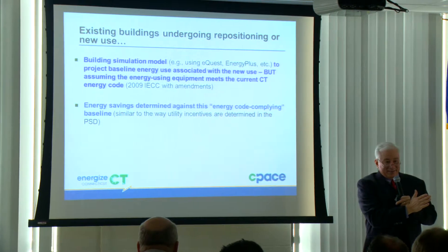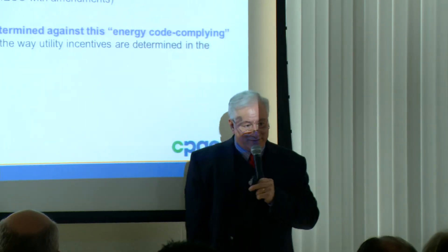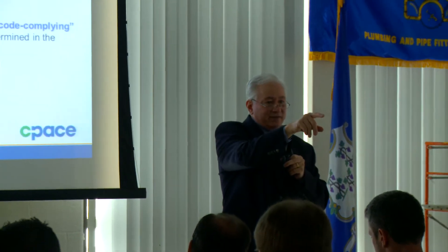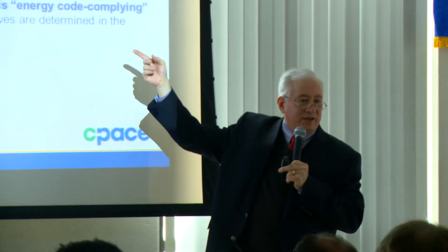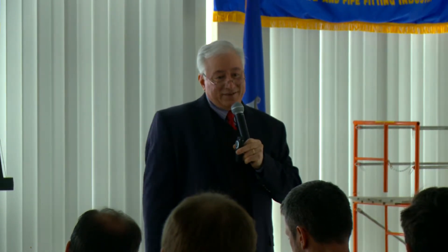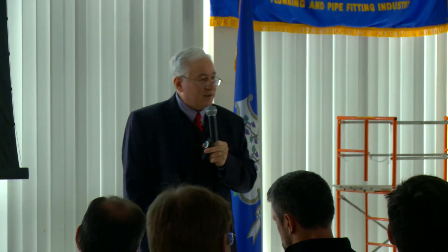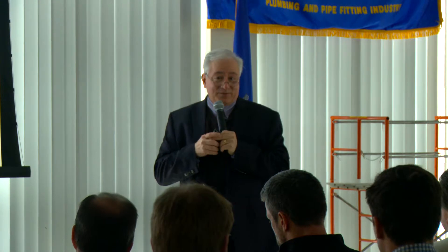Bear in mind that in all our other work, we use actual baseline data, which in many cases is way below code. Only in the repositioned building case do we have none of that data, so we come up with a code-based baseline — the same approach the utilities use. The delta is going to be smaller because you're only going from 2009 code-level equipment to high efficiency, rather than from antiquated equipment. So we can cover it, but it's not going to make you jump out of your socks in terms of savings. It's minuscule compared to a project with genuinely outdated equipment. But at least we can say yes, we cover the scenario.